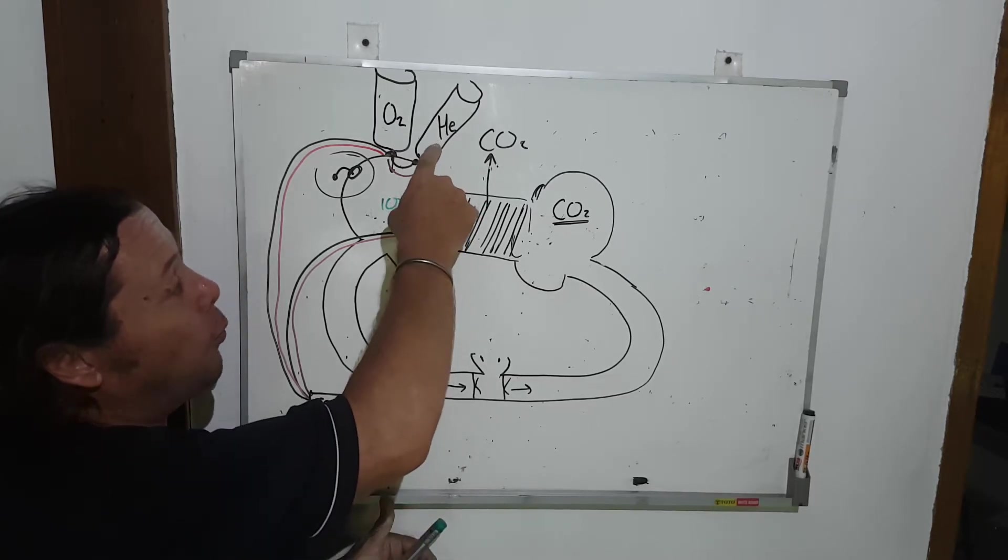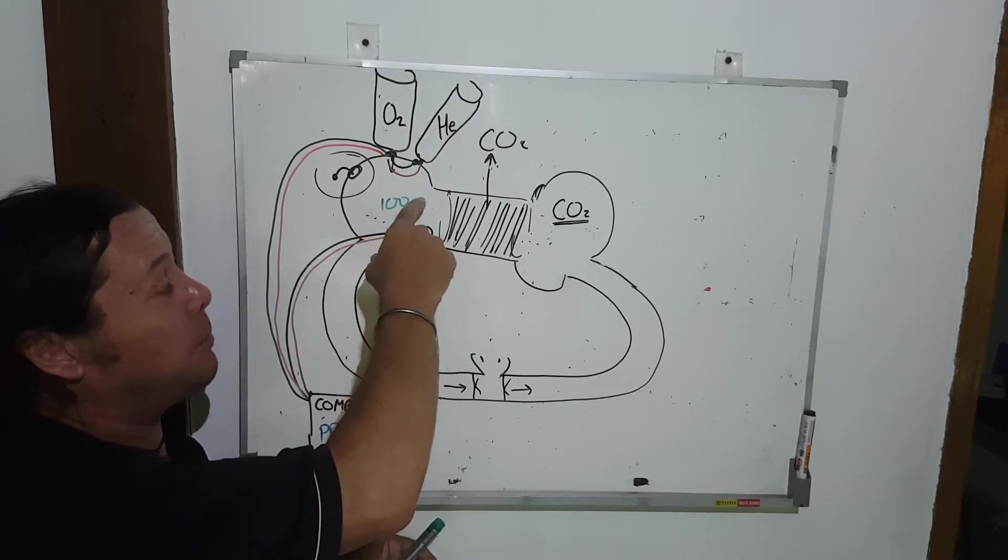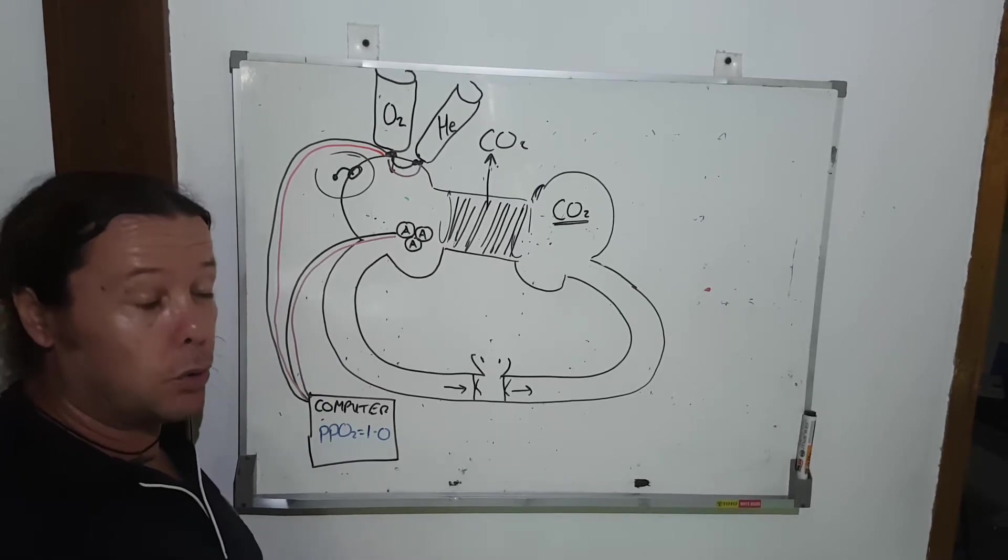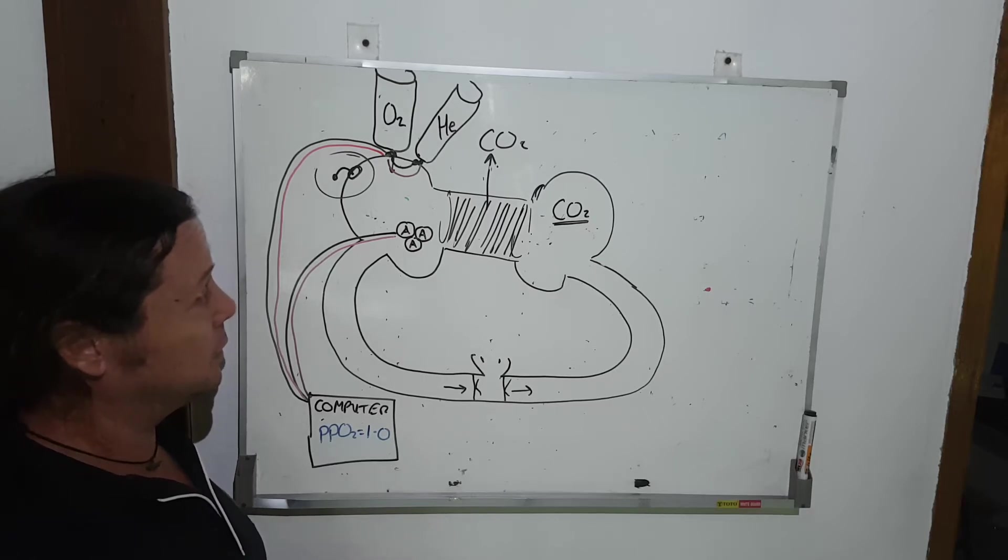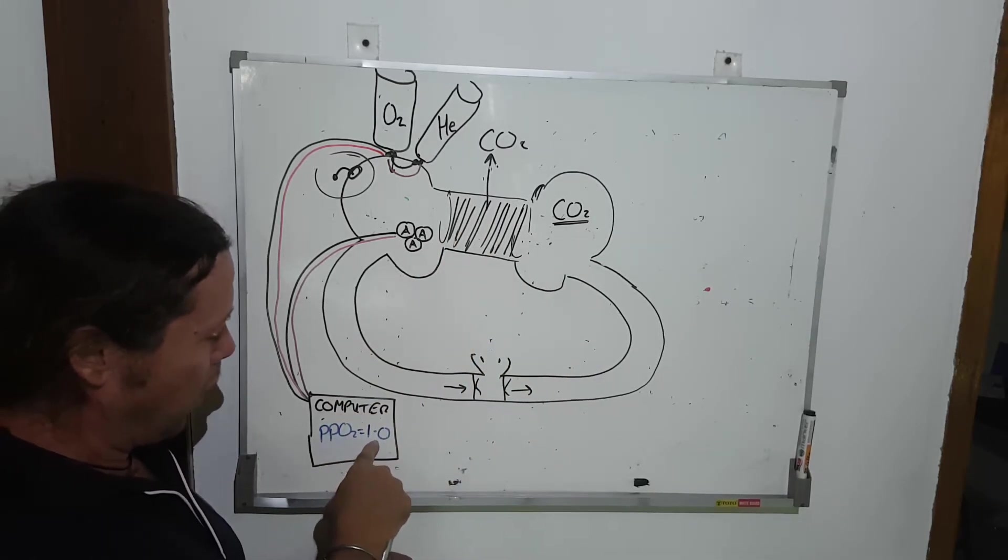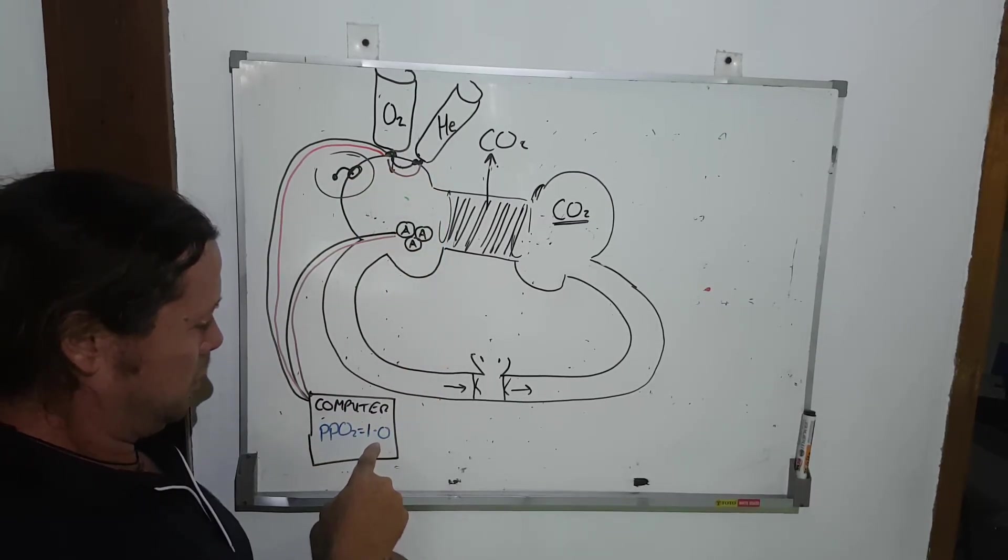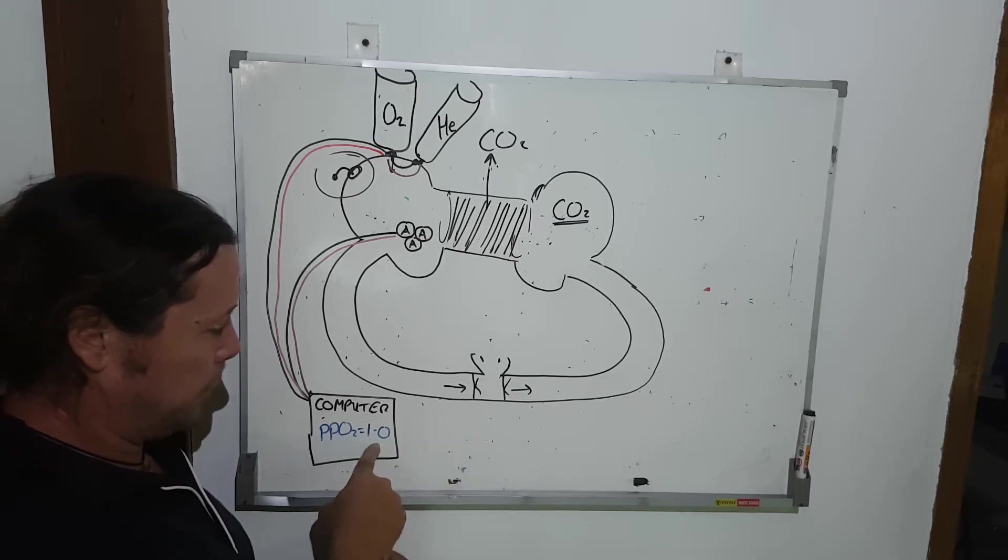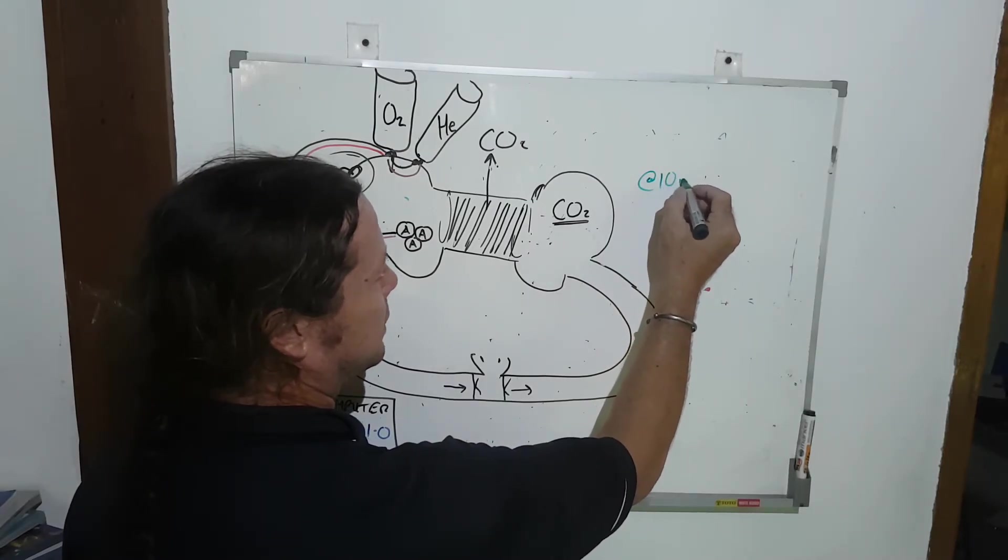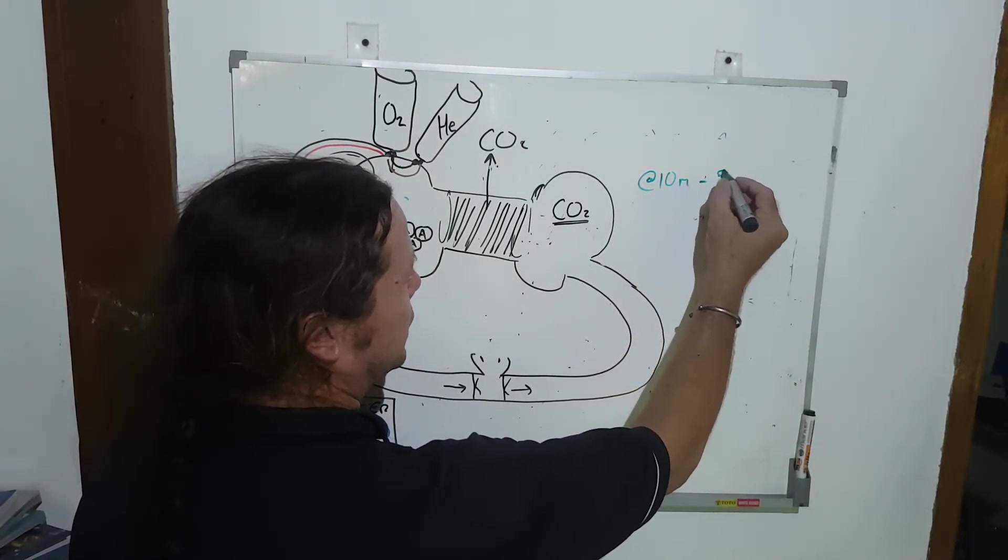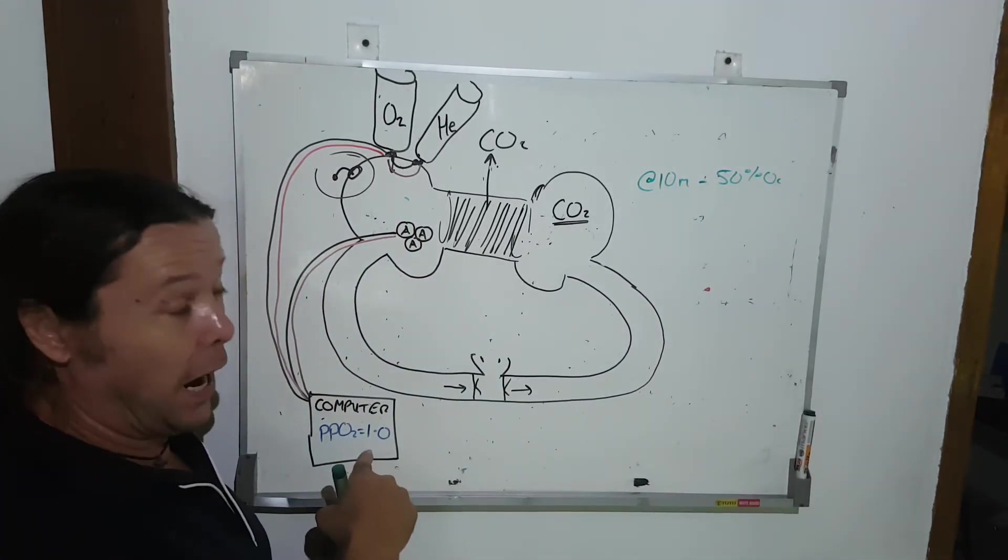So it opens the second bottle and basically, for want of a better explanation, it waters down that mixture. So when you get to 10 meters—10 meters, as you know, is two atmospheres—and my computer says I want one of those atmospheres to be oxygen. So I've got two atmospheres, one must be oxygen. So at 10 meters, my rebreather is going to give me 50% oxygen. One atmosphere out of the two that are available.